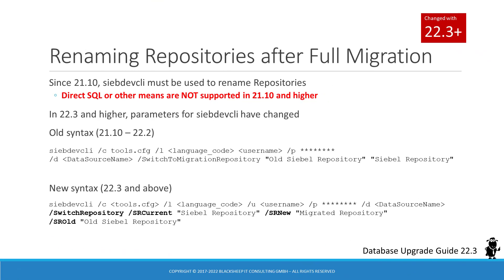With the 21.10 update, Oracle introduced a new way to rename repositories after a full migration. After running a full migration, two repositories exist in the target database: the current Siebel repository and the new, freshly imported, migrated repository. As of 21.10 and later, the SiebDevKly command line utility, also referred to as Headless Siebel Tools, must be used to execute the rename operation, ensuring other necessary operations are also executed on the target environment. In 21.10 or later, it is no longer supported to rename repositories with direct SQL statements.